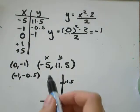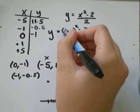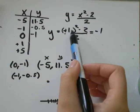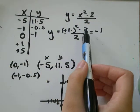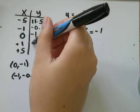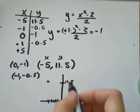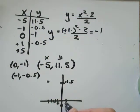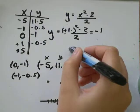And let's do positive 1. That's my next X. 1 squared would be 1 minus 2 would be negative 1. Divided by 2 would be negative 0.5. So, I'm at positive 1, negative 0.5. That's my other point.